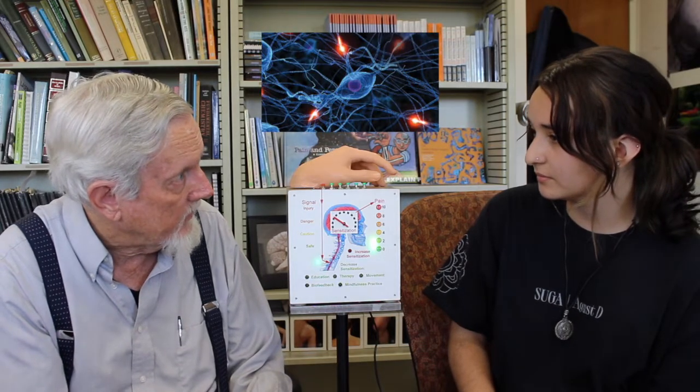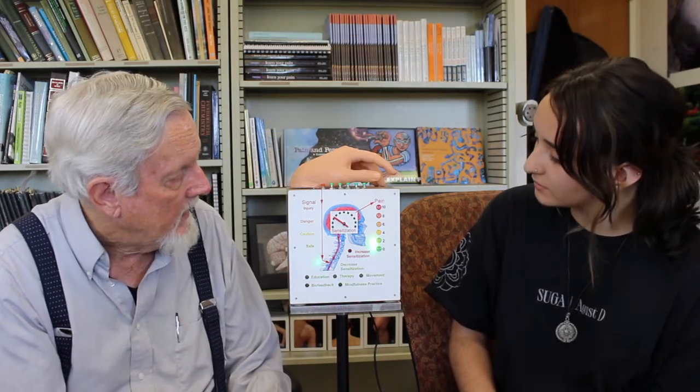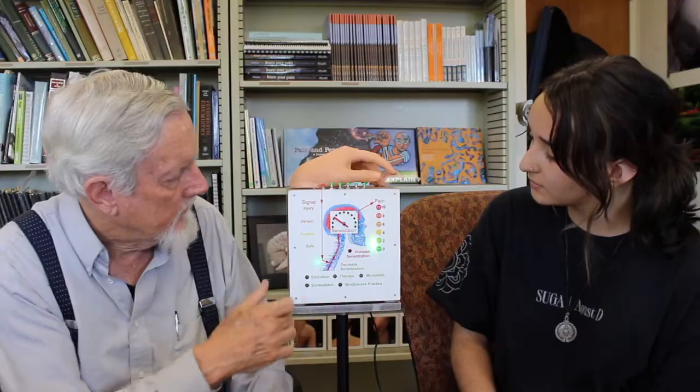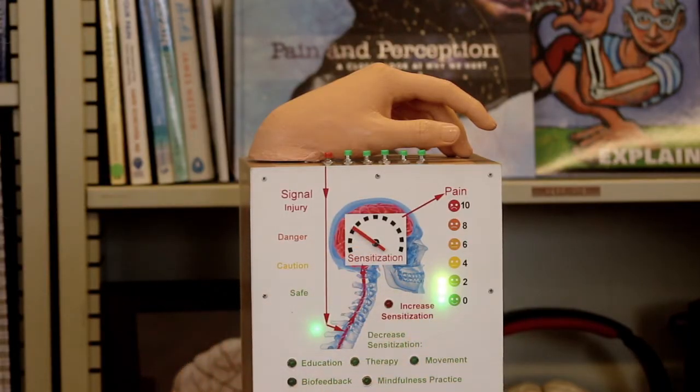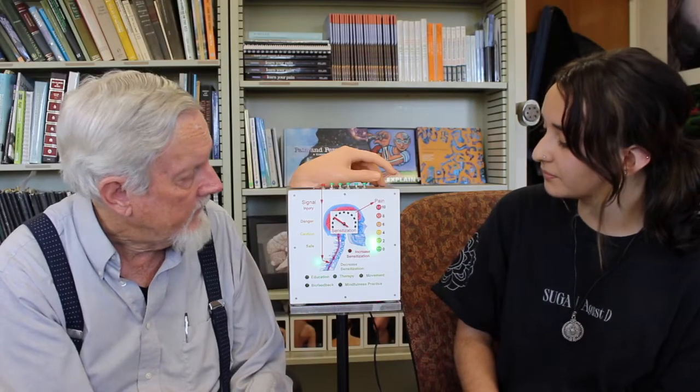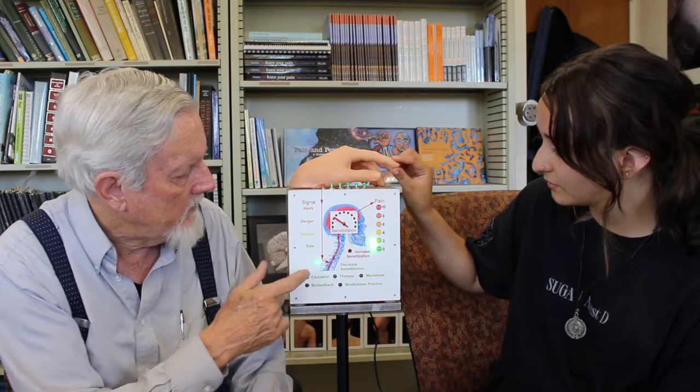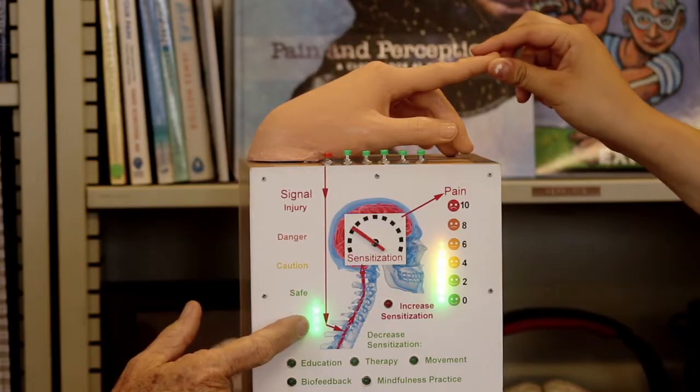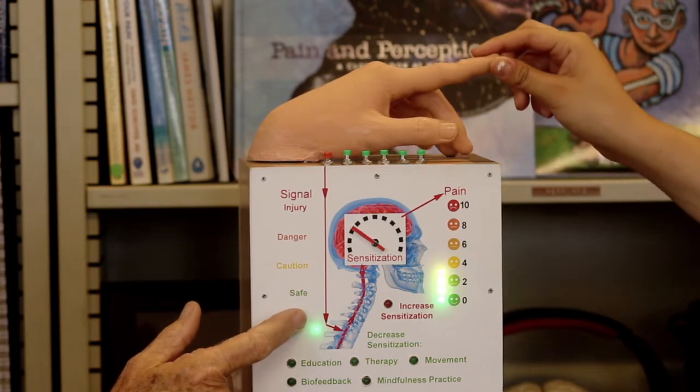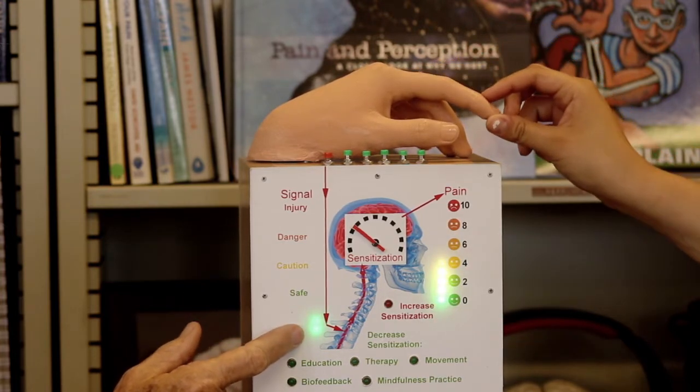That's it. Sensitization is like a volume control knob on pain. And so now, even though the signals are safe, because of the sensitization, there's pain. Now that there's sensitization, try lifting the finger the amount that would have been safe, and you see you get intense pain even though you're lifting the finger safe amounts.